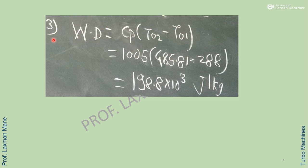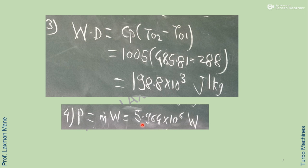Work done for the centrifugal compressor is given by the formula Cp into (T02 minus T01). Here the value of Cp for air is 1005 J per kg Kelvin, so work done is obtained in J per kg. Power is the product of mass flow rate and work done, giving power in Watts.